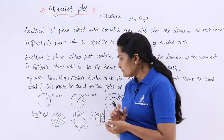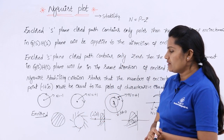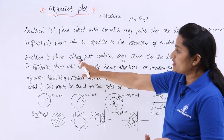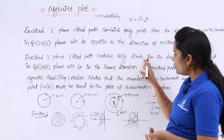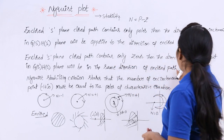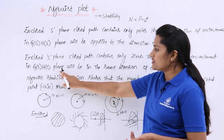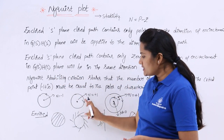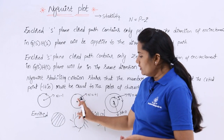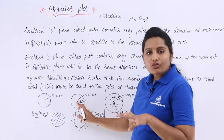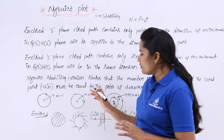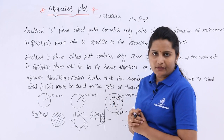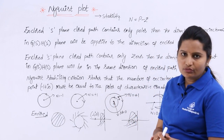When N is equivalent to plus 1, you can see the direction. If the enclosed S-plane closed path contains only zeros, then the direction of encirclement in G(S)·H(S) plane will be in the same direction as the enclosed path — that means clockwise direction. So whenever you are having only zeros, N is equivalent to plus 1, meaning each zero is equivalent to plus 1.